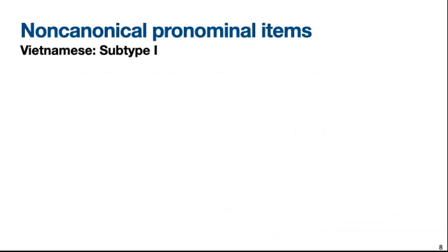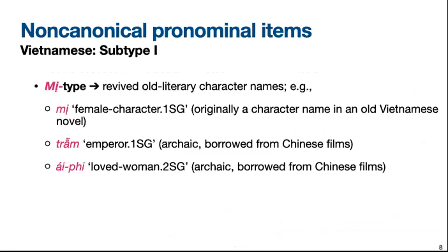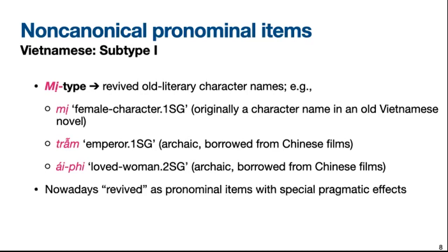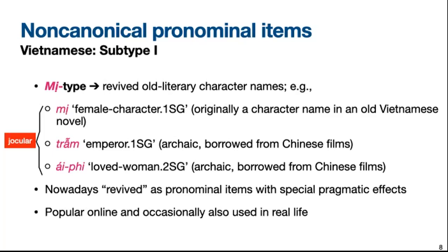Thank you, Julio, for a very helpful summary. I will start with the first subtype of non-canonical pronominal items in Vietnamese — I call this the Mị type, which typically involves old literary character names that have been revived in modern usage. Some terms in this group include mị, a first-person singular pronominal item originally a character name in an old Vietnamese novel; or trẫm, an archaic first-person singular pronominal item which literally means emperor, borrowed from widespread Chinese historical films in Vietnamese pop culture. We also have ý phi, which shares the same borrowing root but refers to the second-person singular only, and literally means 'the emperor's beloved woman'. All of these items are archaic but have been revived in recent times as pronominal items with special pragmatic effects, used most often in a jocular way. These terms are very popular online and also occasionally used in real life.